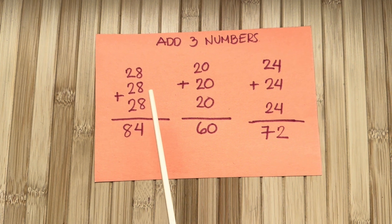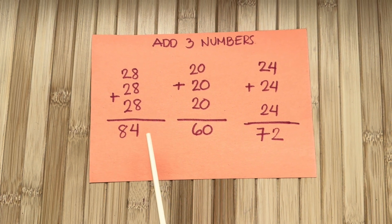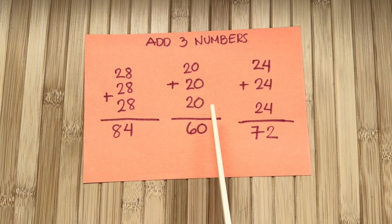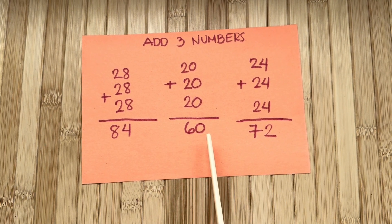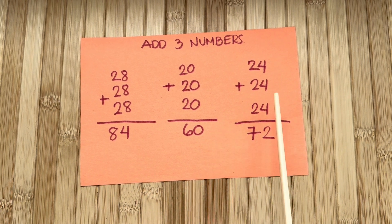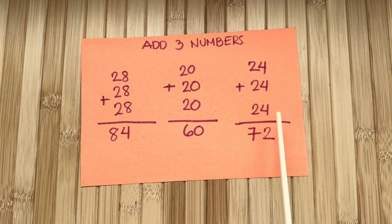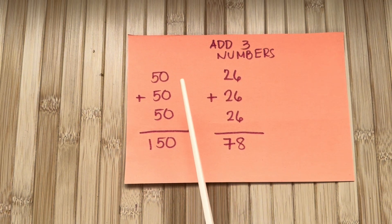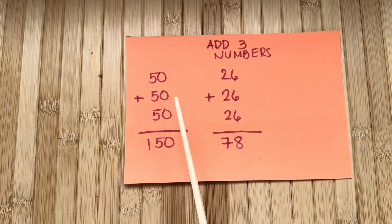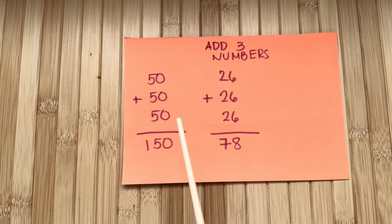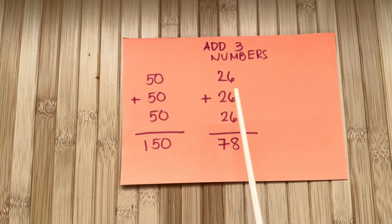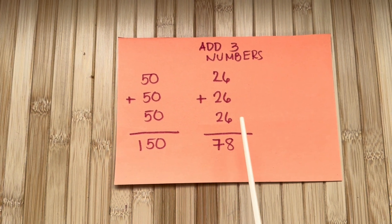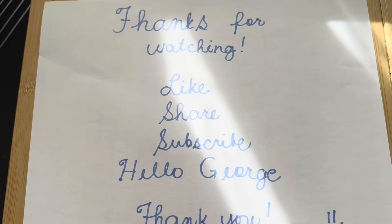28 plus 28 plus 28 is equals to 84. 20 plus 20 plus 20 is equals to 60. 24 plus 24 plus 24 is equals to 72. And 50 plus 50 plus 50 is equals to 150.